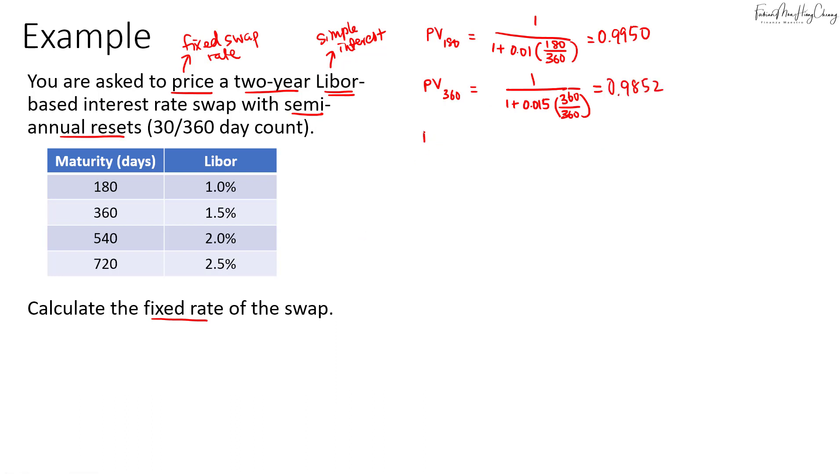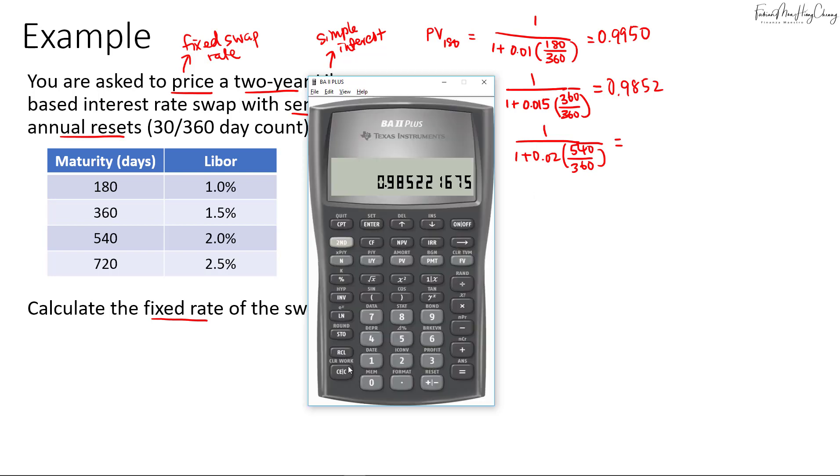And then we continue on with PV for 540 days so that's 1 over 1 plus 2% multiplied by 540 over 360. So that'll be equals to 1 plus 0.02 multiplied by 540 over 360. And then we invert it so we get 0.9709. So let's store it for the number 3.